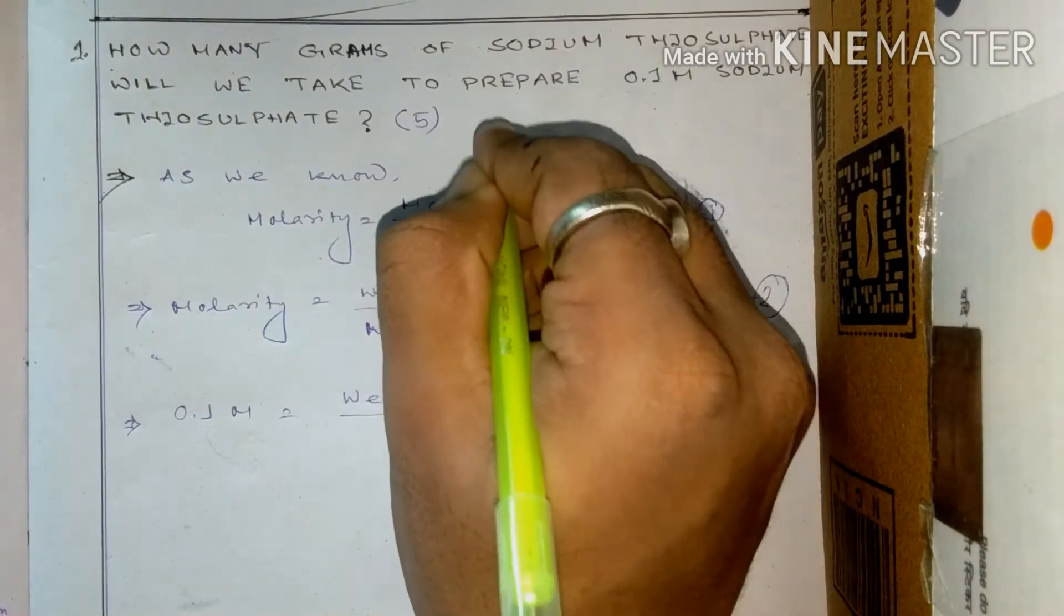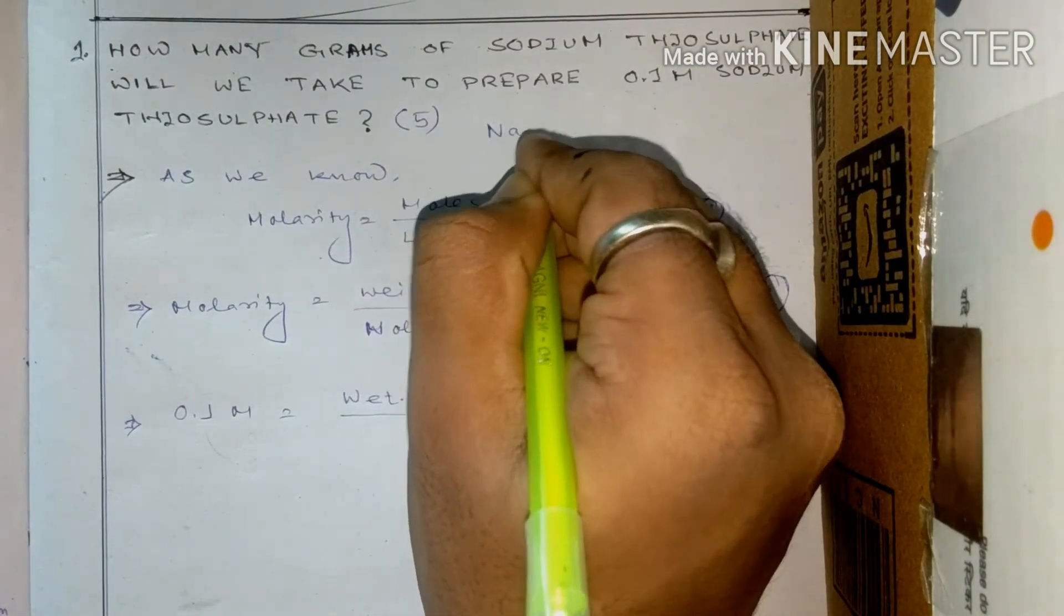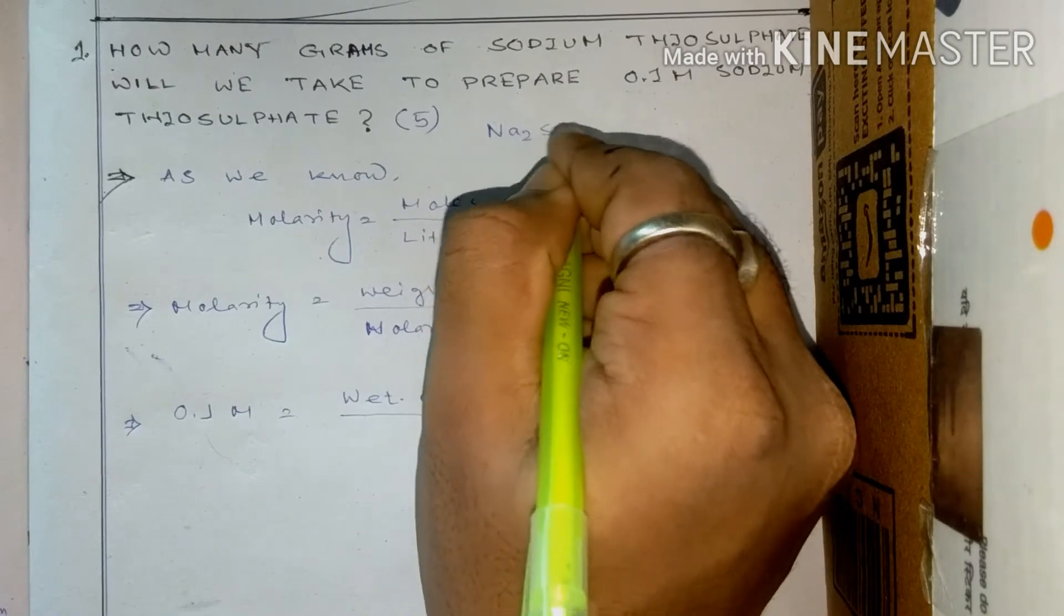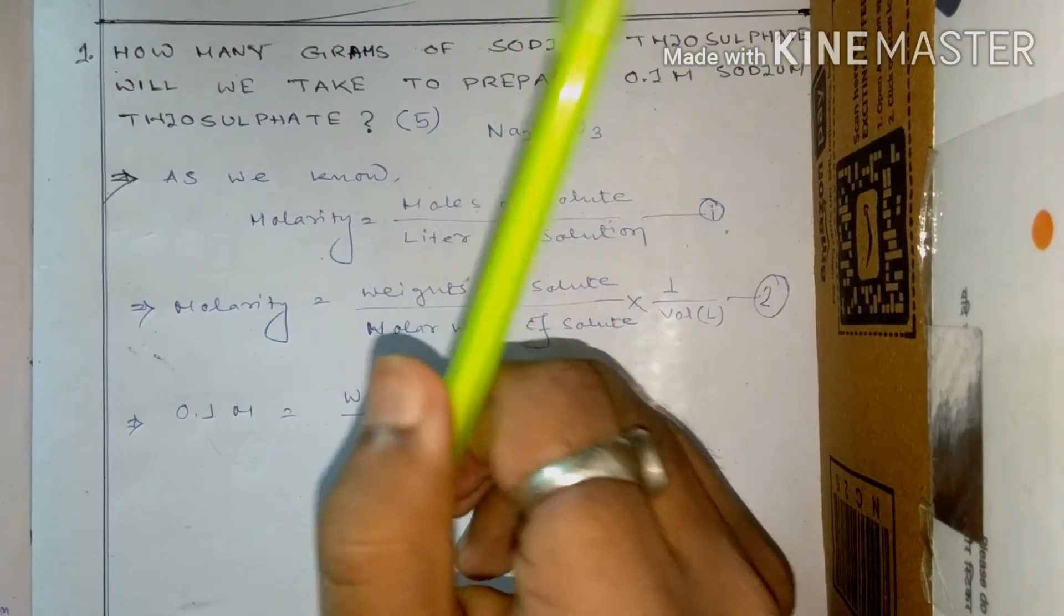As you know, sodium thiosulfate, the formula is Na2S2O3.